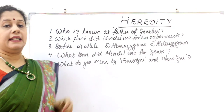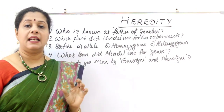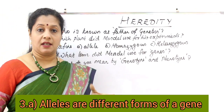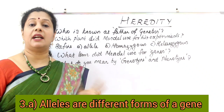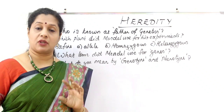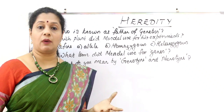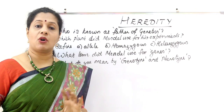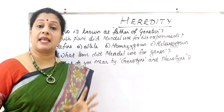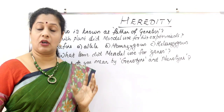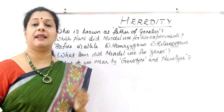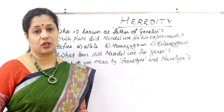Define allele. Allele means different forms of a gene. Every gene has two forms — capital T for tall and small t for dwarf. So tallness and dwarfness are two forms of the same gene. That is an allele. Capital T and small t are alleles of each other.